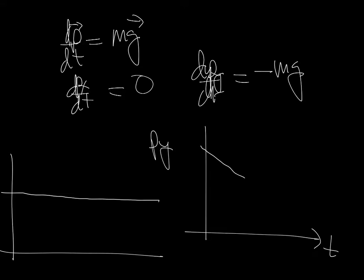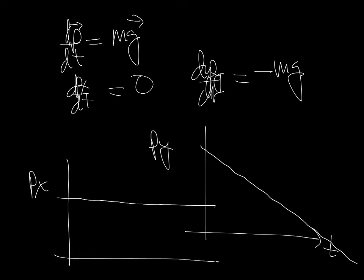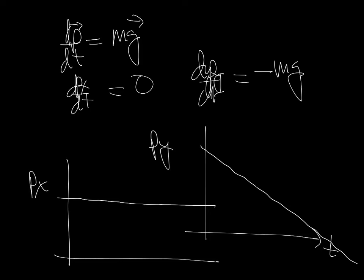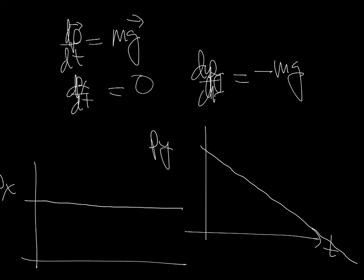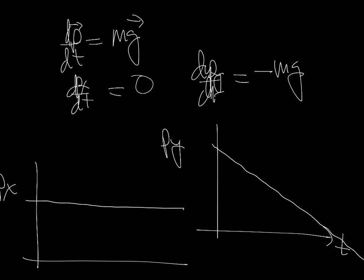It starts big and gets more negative with time. In the direction in which the momentum is constant, p_x is just a constant. In the y direction where momentum is changing, you can see that momentum is a function of time with a constant negative slope, consistent with a constant negative dp_y/dt. So that's a straight line going down.